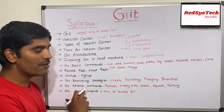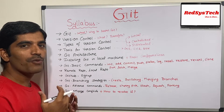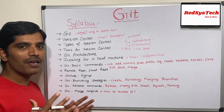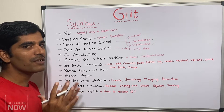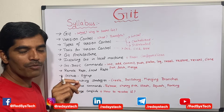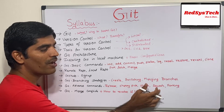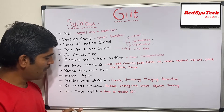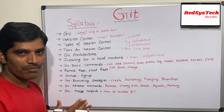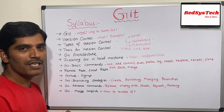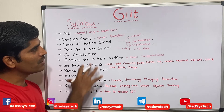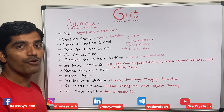Later we are going to learn advanced commands, which are very helpful when working in a team with multiple developers pushing code. We will cover how to handle merging conflicts, how to do rebase, how to cherry-pick a particular commit, how to do stash, squash, and forking. Finally, we will learn what merge conflicts are, how to raise a merge request, and how to resolve merge conflicts. These are the topics we are going to cover, and these are the very bare minimum things you need to understand before working with Git.